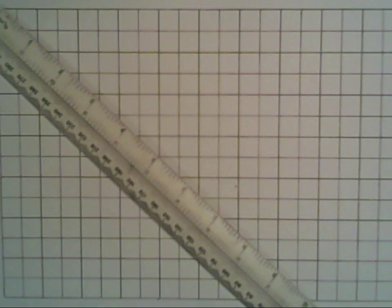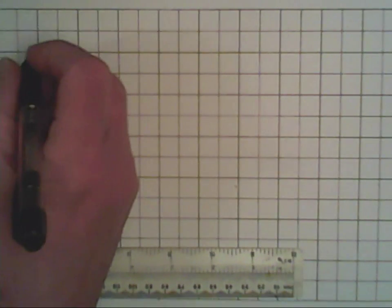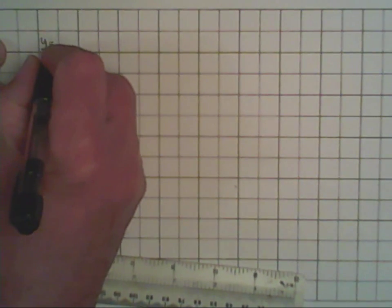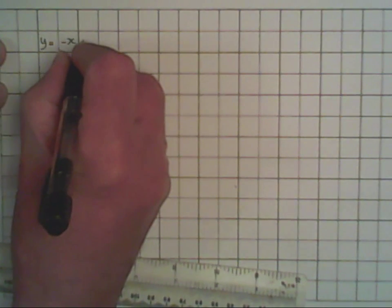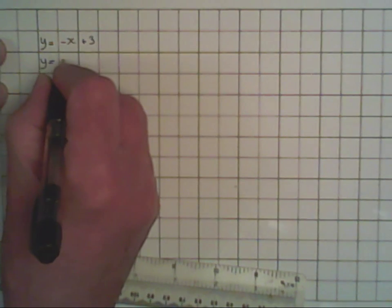Hello, today we want to solve simultaneous equations using the graphical method. A simultaneous equation occurs when the equation is true at one particular point for both expressions. The equations I'm going to use today are y equals minus x plus 3 and y equals x minus 2.